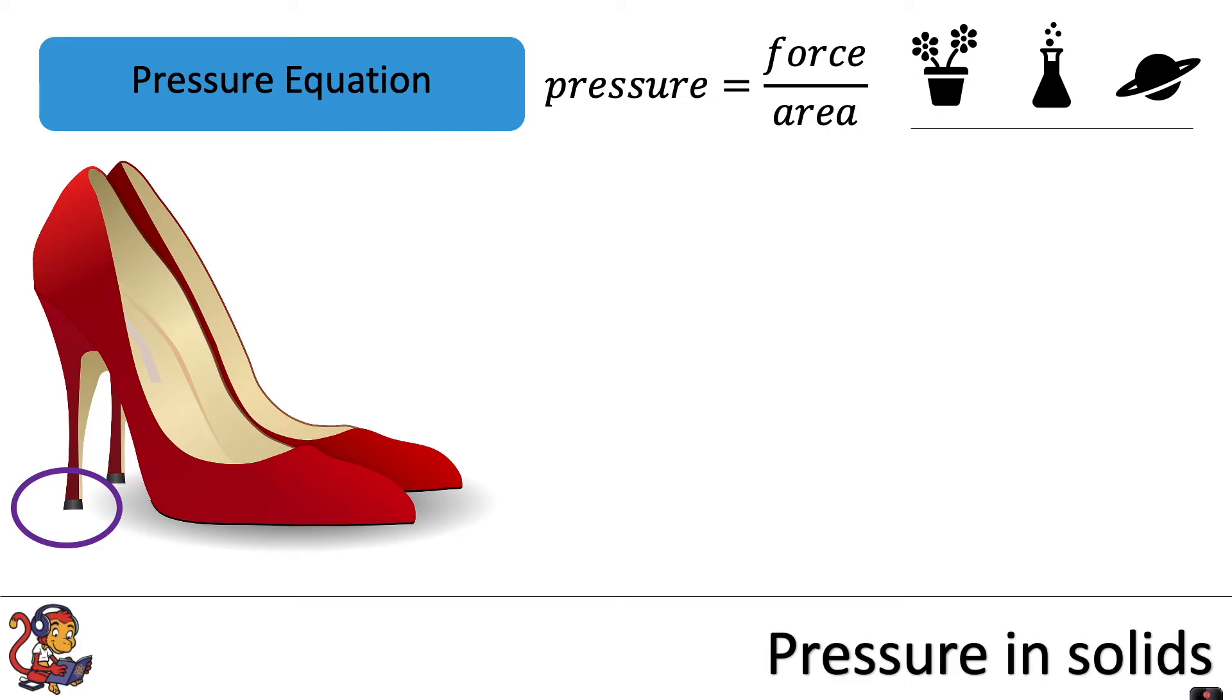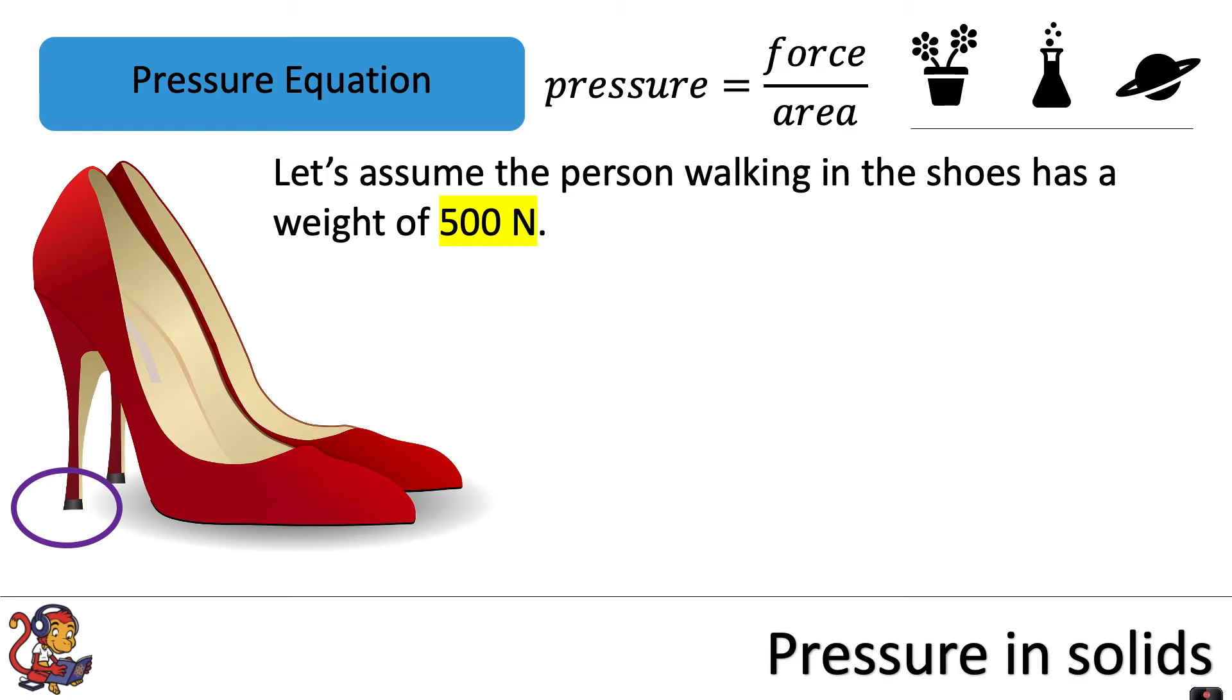Next we can look at the heel of the shoe. Let's assume the person walking in the shoes has a weight of 500 newtons, so the weight is the same as before, and let's assume that the heel of the shoe has an area of just 0.8 centimeters squared.